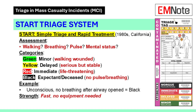Here's how START works. You assess four things: Can they walk? Are they breathing? Do they have a pulse? And can they follow commands? Based on that, you tag them: Green — walking wounded, minor injuries, think sprained ankles. Yellow — delayed, serious but stable, like a femur fracture with good vitals. Red — immediate, life-threatening, like airway obstruction or massive bleeding. Black — expectant or deceased, no pulse, no breathing after basic airway opening. For example, a patient is unconscious and not breathing even after you tilt their head back — black tag, move on. Harsh, but it's about speed.